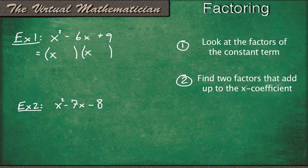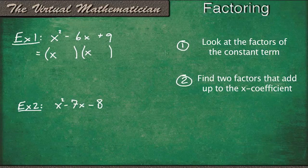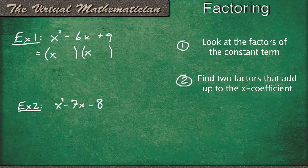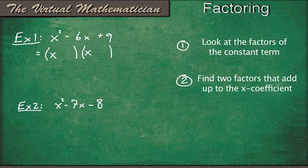So to find the numbers we need to add or subtract from x to get our polynomial back, we're going to use our strategy. Step one says look at the constant term. So in this case, the constant term is 9. So we need to find two numbers that multiply together to be 9, and add up to give us negative 6.